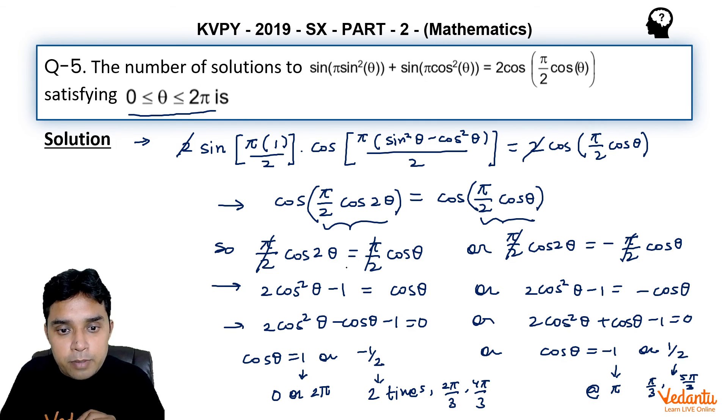We can see the number of solutions we are getting: that is 1, 2, 3, 4, 5, 6, and 7.